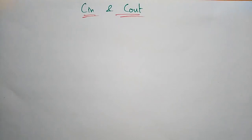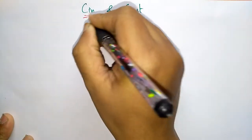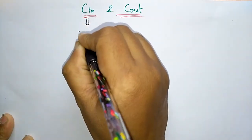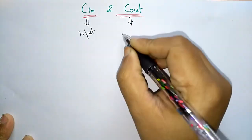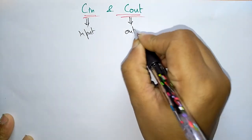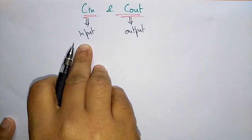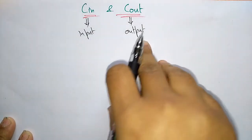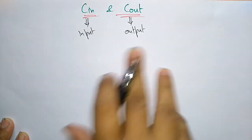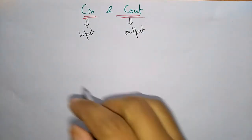Welcome back. Coming to the next topic: cin and cout. These are operators used in C++, which is an object-oriented language. cin is a function used for input, and cout is a function used for output. cin will extract values from the user, and cout will display the result on the screen.